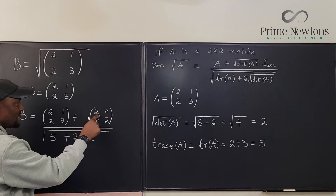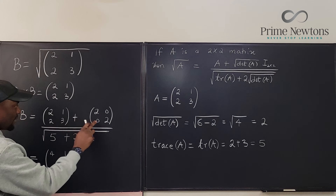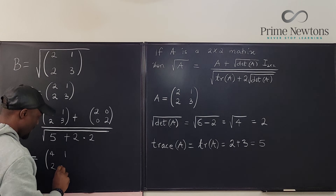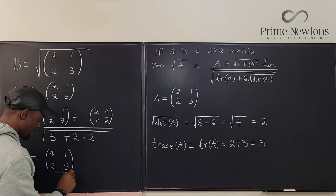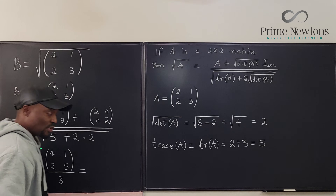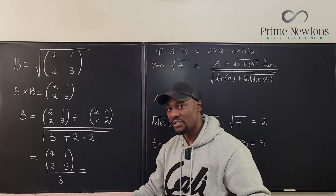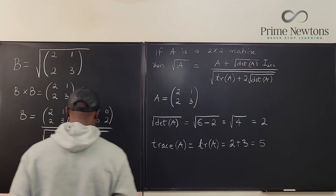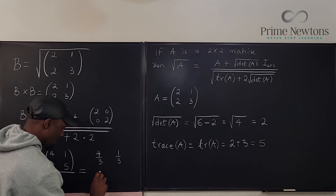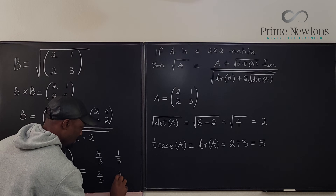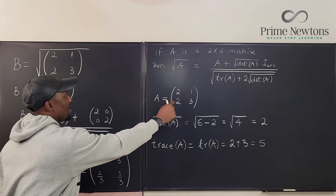Adding the two matrices: 2 plus 2 is 4, 1 plus 0 is 1, 2 plus 0 is 2, and 3 plus 2 is 5. Then dividing each entry by 3, our final answer is the matrix: 4/3, 1/3, 2/3, 5/3. This is the matrix which when multiplied by itself will give the original matrix.